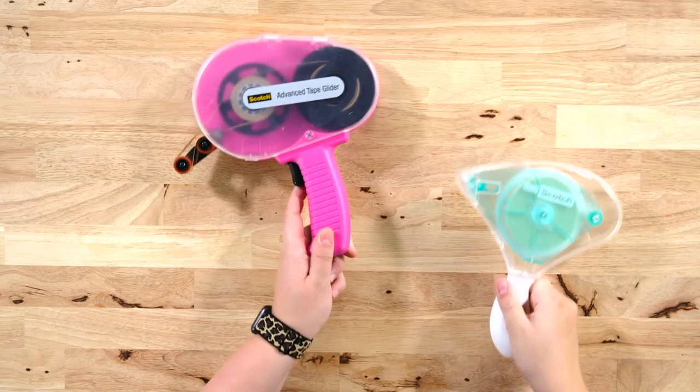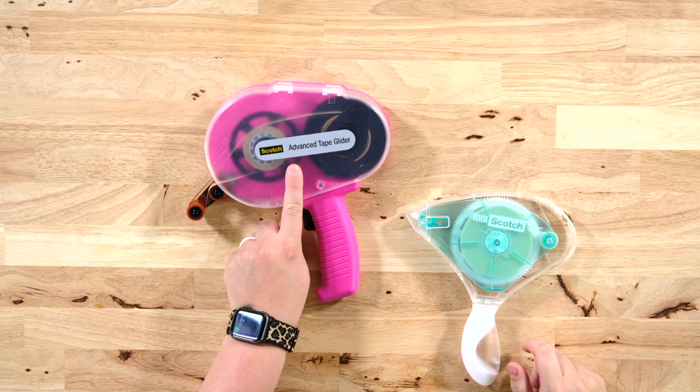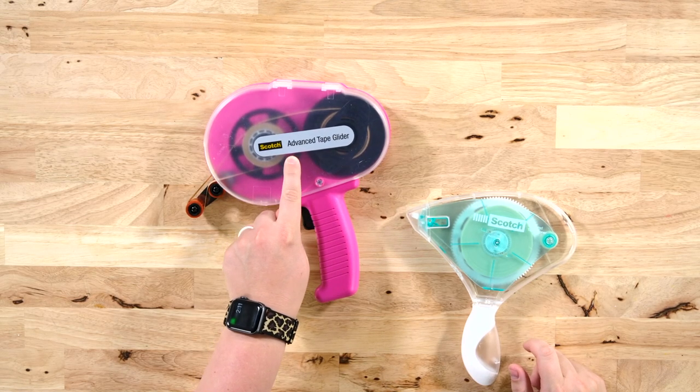Next up is some adhesive. So here is the adhesive that we love. We love using our advanced tape glider. This is a Scotch ATG gun.